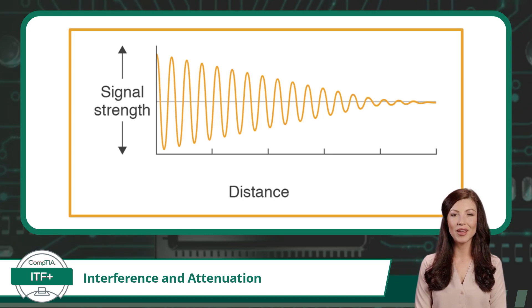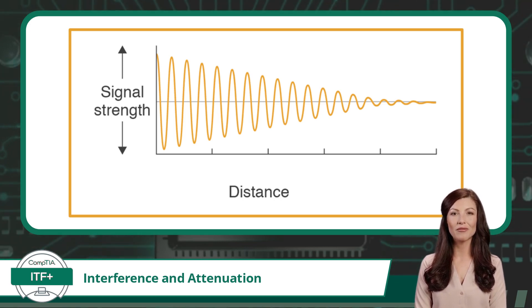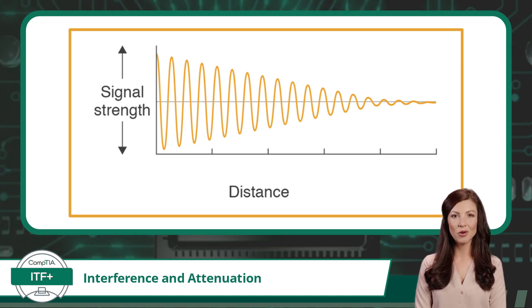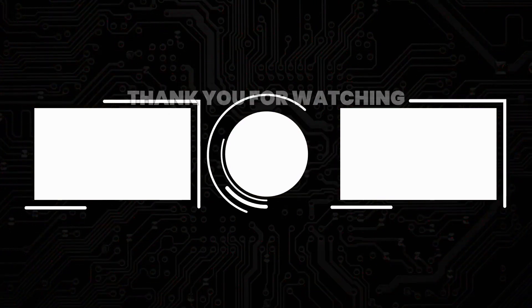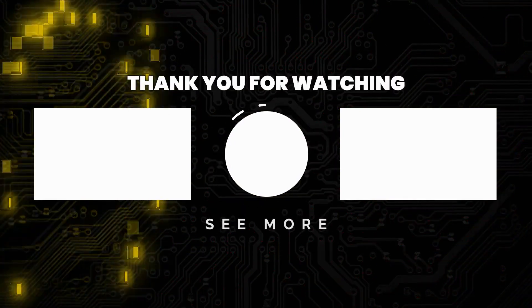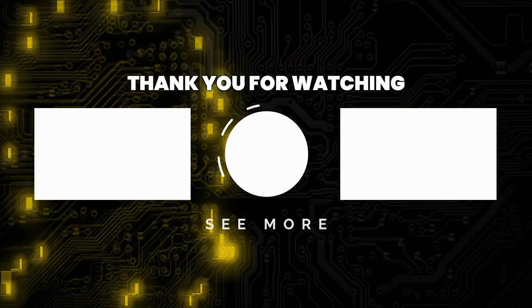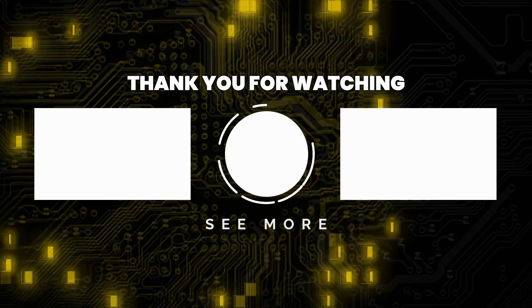You should now understand how EMI, physical interference, and signal attenuation can collectively weaken a communication signal and lower the signal-to-noise ratio. Thank you for watching — subscribe for more great content.